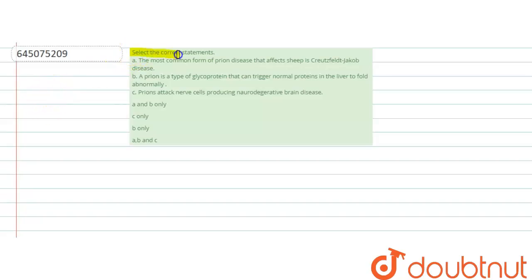A question that says select the correct statement. We are having three statements. Statement one says the most common form of prion disease that affects sheep is Creutzfeldt-Jakob disease. The second statement says prion is a type of glycoprotein that can trigger normal protein in the liver to fold abnormally.